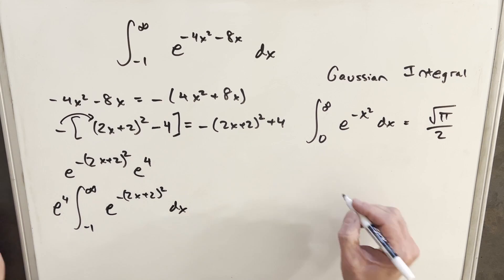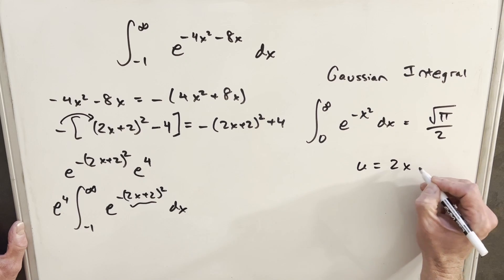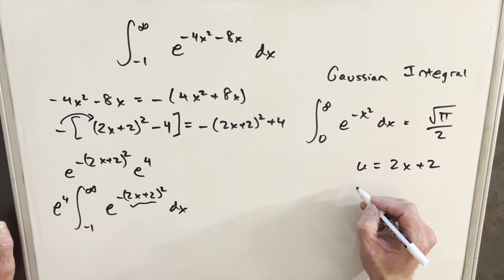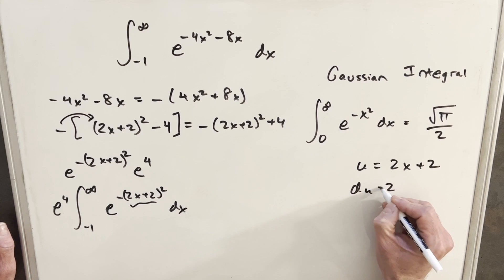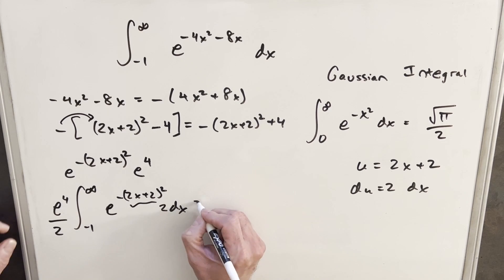Now, what I'm going to need to do from here is let's make a u substitution. I'm going to call this my u, so I'm going to say u equals 2x plus 2, and then du is going to be equal to 2 dx. And just to set this whole thing up, I'll just create a little 2 right there and divide by a 2, so I'm not changing it. And then we'll make this substitution, so we're going to have our e to the 4 over 2.